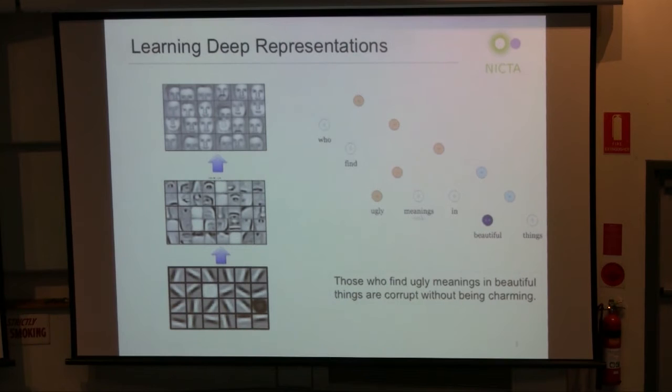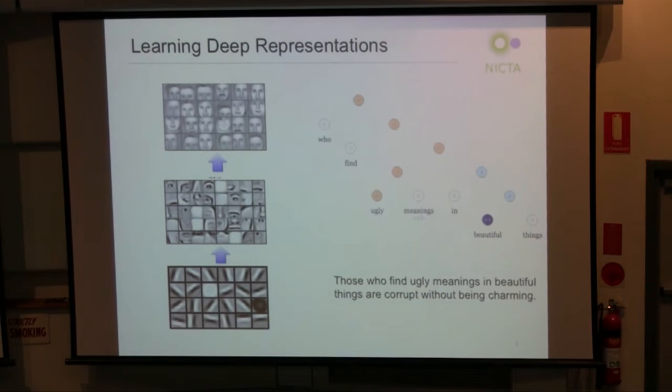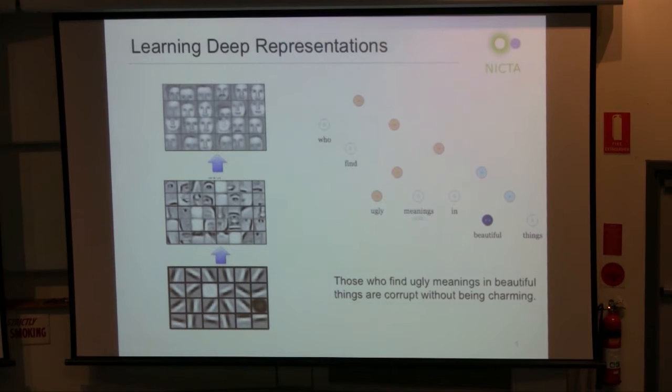Since 2006, people became excited about deep learning because they found a way to learn really deep architectures. In the past, people learned maybe two or three layers. Now we find that for some applications it can be 30 or even more layers. Why do we need so many layers? Mostly they are more expressive than shallow architectures.